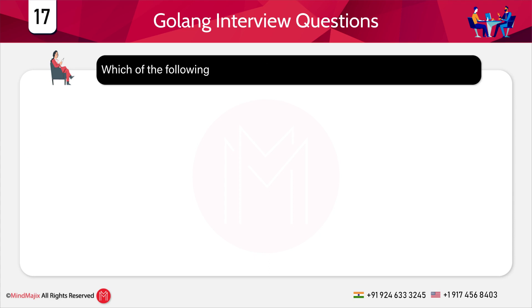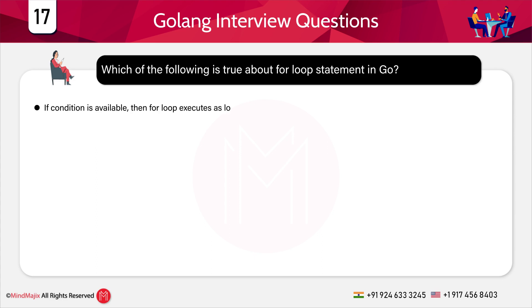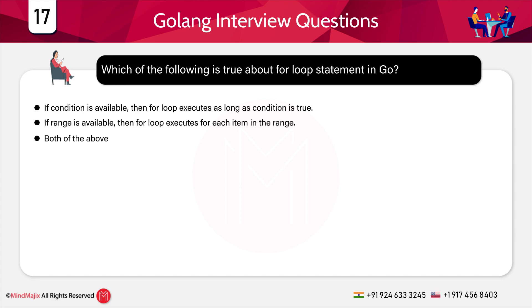Which of the following is true about the for loop statement in Go? Option a: if a condition is available, the for loop executes as long as the condition is true. Option b: if a range is available, the for loop executes for each item in the range. Option c: both of the above. Option d: none of the above. The answer is c) both of the above.